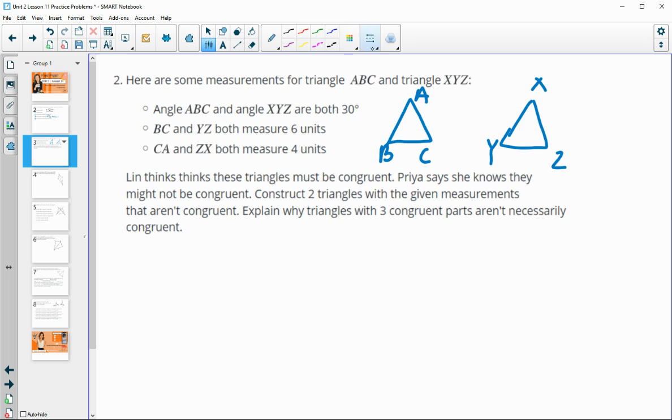Then you can label the information onto them and see what they're giving you. So angle ABC. So this angle is 30. And angle XYZ is 30. BC is 6. And YZ is 6. So those are congruent. And then CA is 4. And ZX is 4.